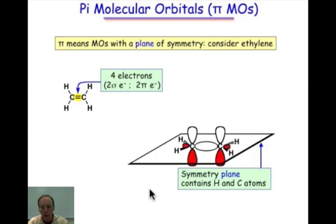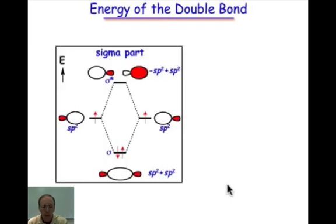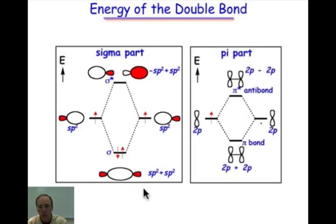We can draw the pi bond as resulting from a combination of the p orbitals. We can draw the sigma bond as the result of sp2-sp2 overlap. One part that corresponds to the sigma part that combines the sp2 orbitals that look like px plus px combinations from sheet 1, and then the remaining p orbitals on each carbon can come together in a side-by-side mode that produces a pi bond and a pi star bond.